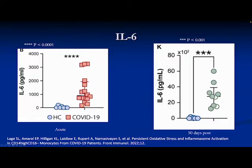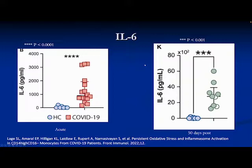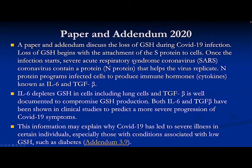This slide represents elevations of IL-6. The circles represent the control and the squares represent the IL-6 elevations. There's a very high degree of statistical significance showing significant elevation of IL-6. At 50 days — almost two months after the infection — IL-6 remains elevated in people who had COVID-19, even with mild to moderate illness. This may explain some of the findings that Dr. Patterson reported, showing IL-6 is elevated in people with prolonged COVID symptoms.